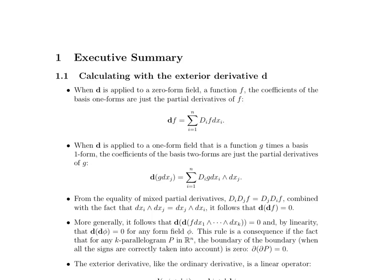So first off, when you're computing the exterior derivative and applying it to a zero-form field — that's a function — we're liberated from the limit definition and we're using the shortcut version. What we really have here are a bunch of terms that all look the same, that can be expressed in sigma notation. That's going to be the partial derivatives of this function times their respective one-form.